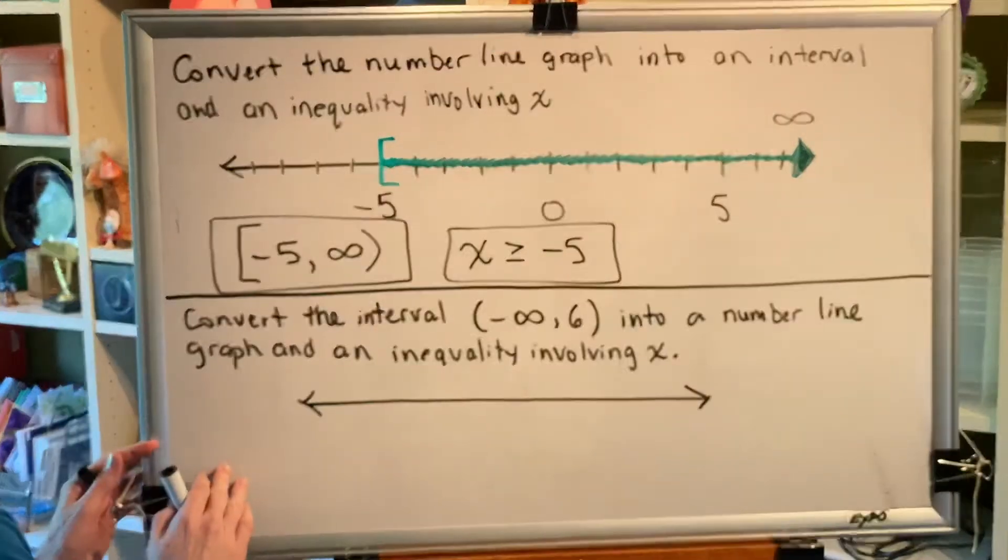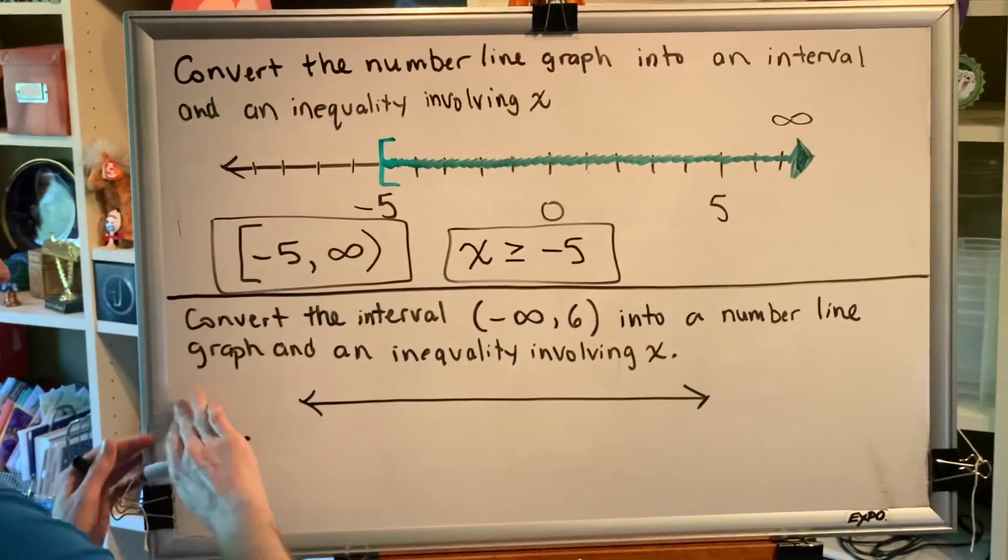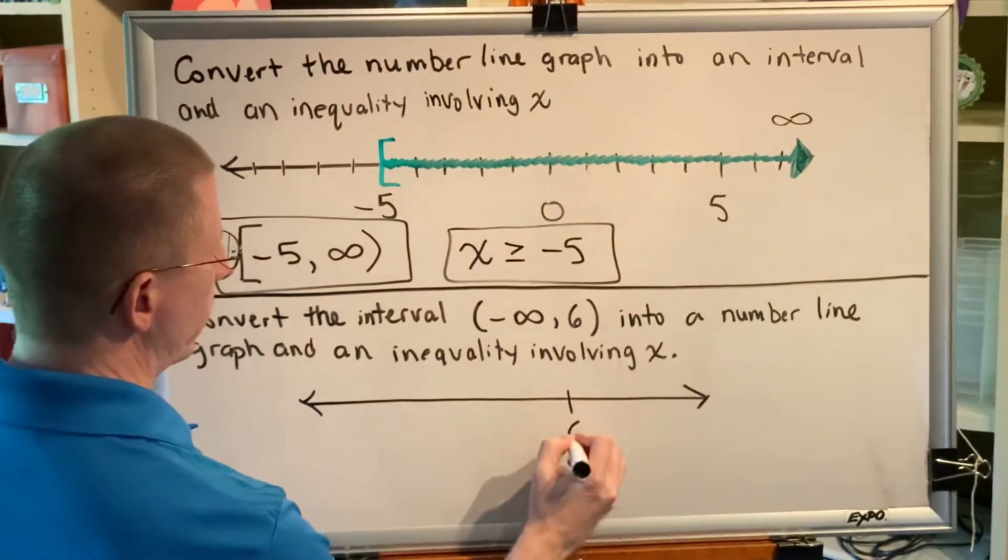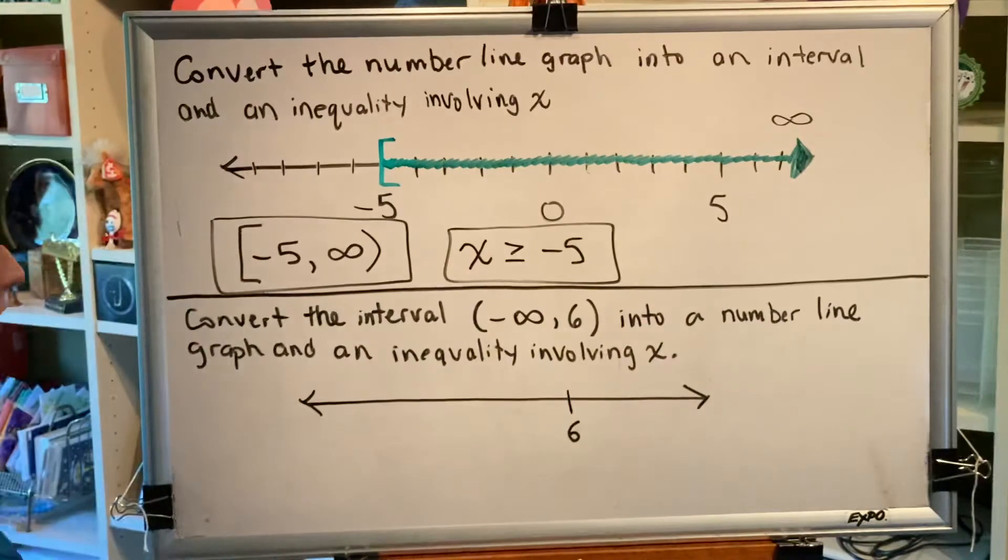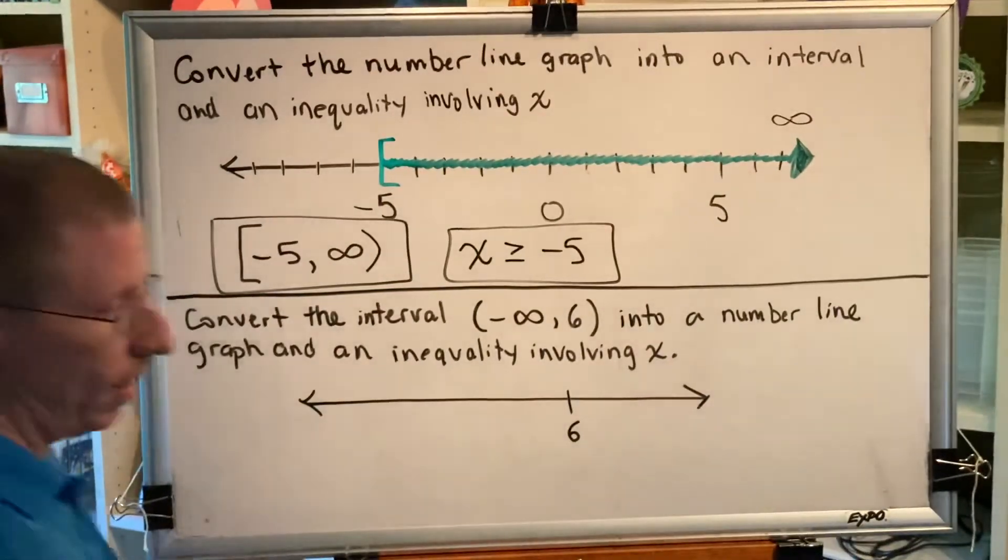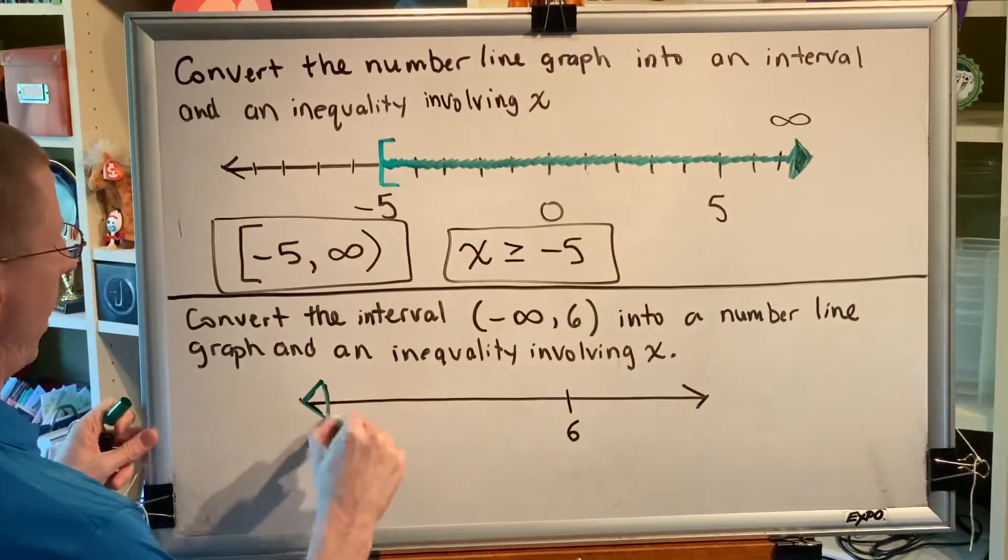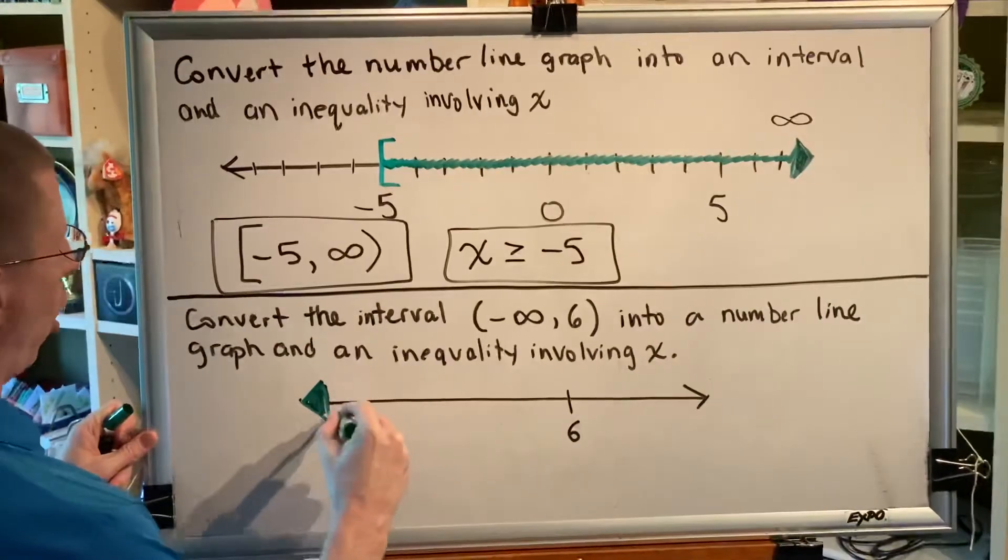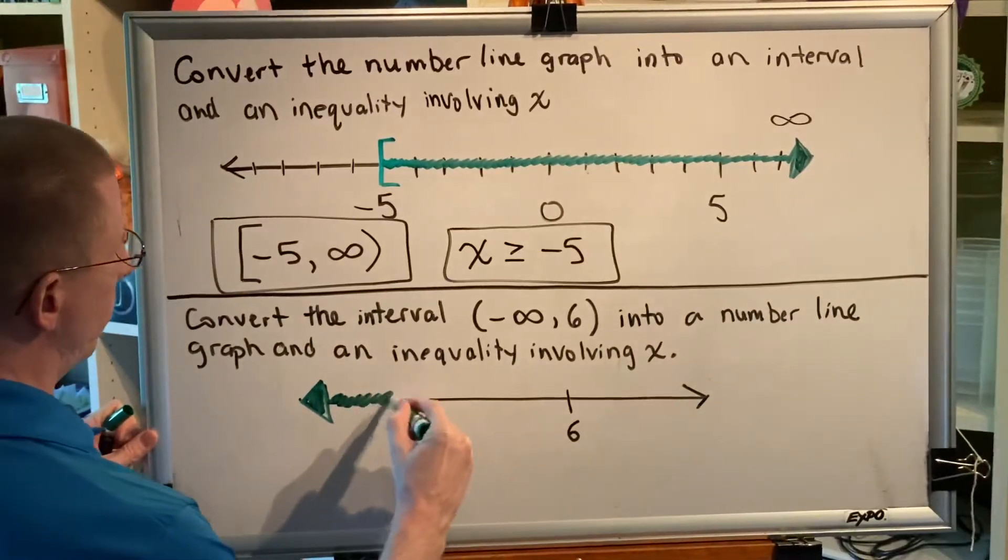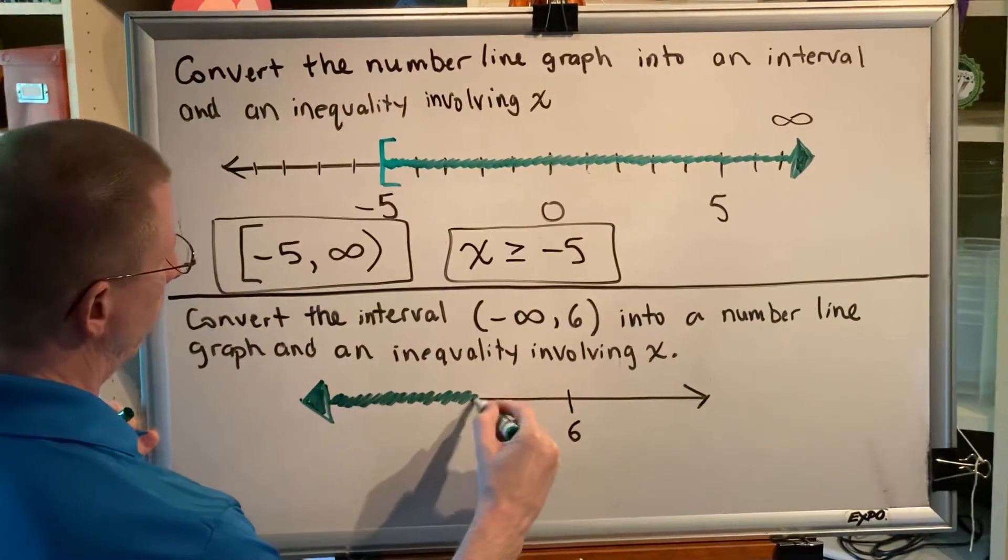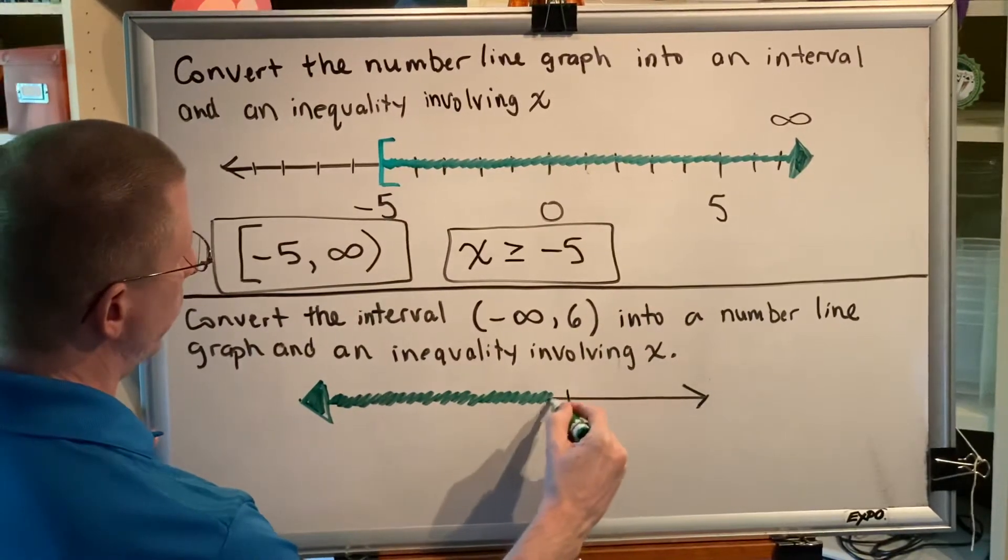So the smallest number is negative infinity, which means we start shading on the far left side of our number line, and we continue shading until we reach the number 6. So the only number that I absolutely have to have on my number line is 6, and I'm going to shade from negative infinity all the way until I reach 6.